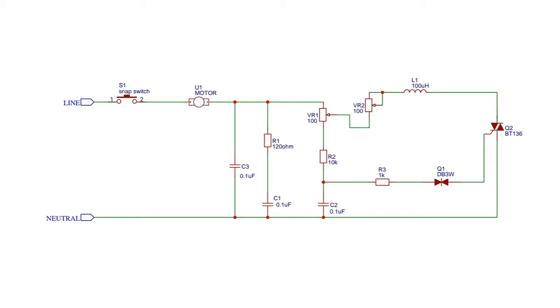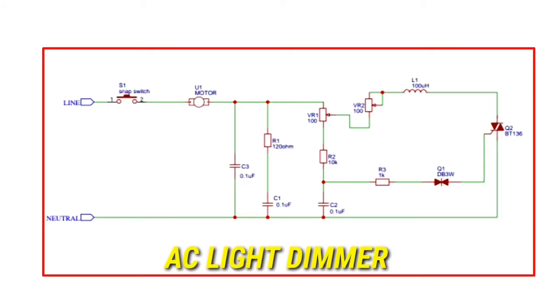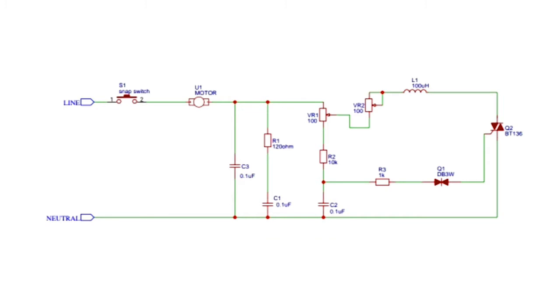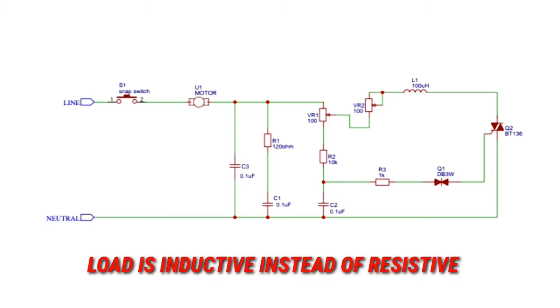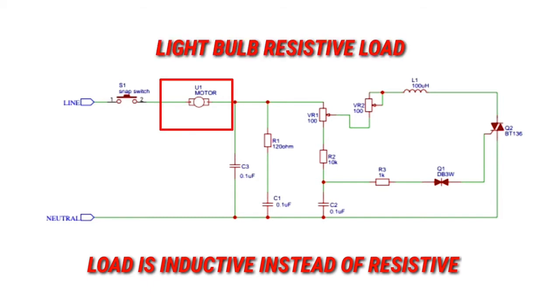After around one hour I came up with a circuit diagram which was rather simple to understand. This is a similar circuit to that of an AC light dimmer which is a very popular circuit, but the difference here is that the load is inductive, or the load is a motor instead of a simple resistive light bulb.